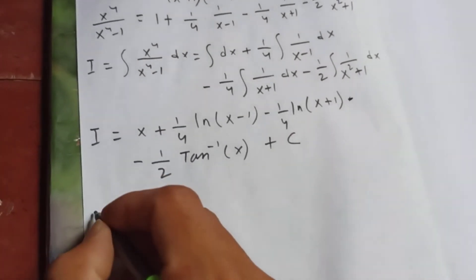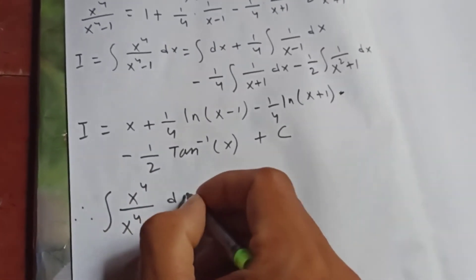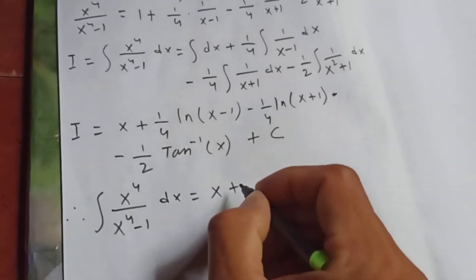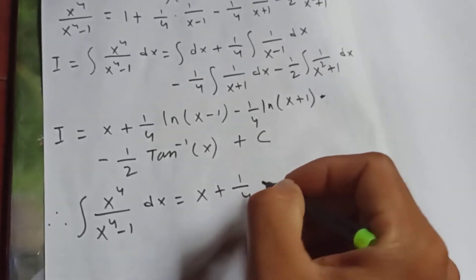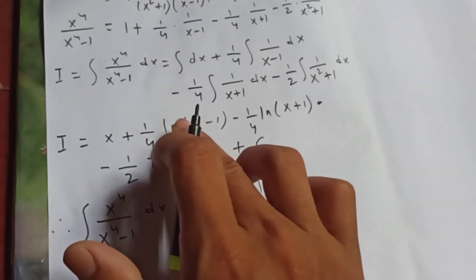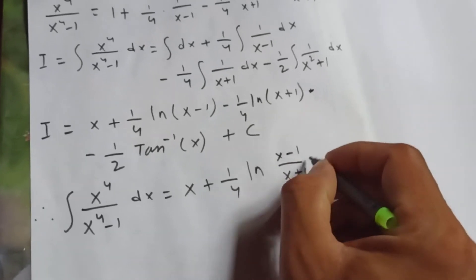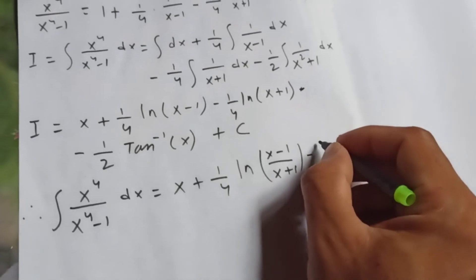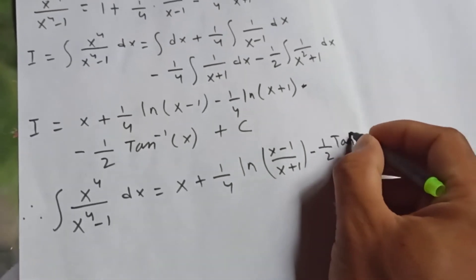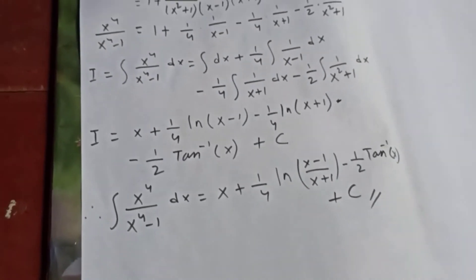Since this is an indefinite integral, we add the constant C. Therefore, the integral of x to the 4 over x to the 4 minus 1 dx equals x, plus one-fourth times natural log of x minus 1 over x plus 1 (combining the logs using log a minus log b equals log a over b), minus one-half times inverse tangent of x, plus C. This is your solution.